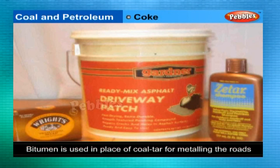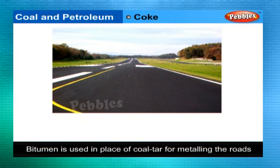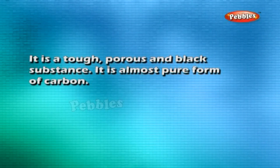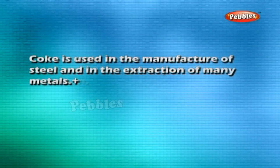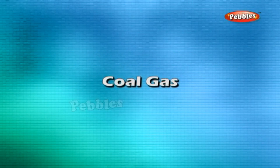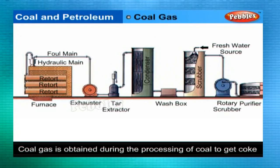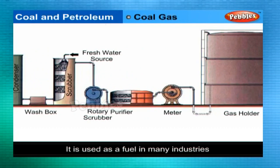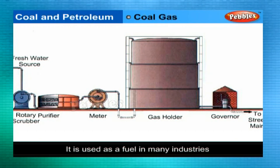These days, bitumen, a petroleum product, is used in place of coal tar for metalling the roads. Coal gas is obtained during the processing of coal to get coke. It is used as a fuel in many industries situated near the coal processing plants.